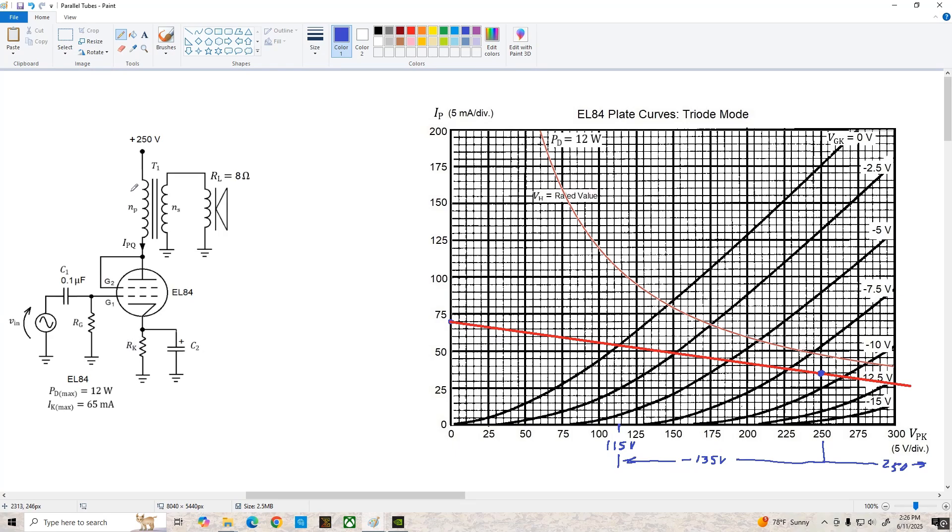Now we've established our q point and our ac load line, we need to come over to the circuit and determine the values for r sub k and the reflected load resistance we need in the plate circuit. Starting with r sub k we need to come back to the curves and estimate what the grid voltage is that gives us this q point. Just kind of eyeballing things here it looks like about negative 9 volts. Then we can find the cathode resistor r sub k by using rk equals negative vgk over i sub p q so we've got 9 volts divided by 35 milliamps and that gives us a cathode resistor of 257 ohms.